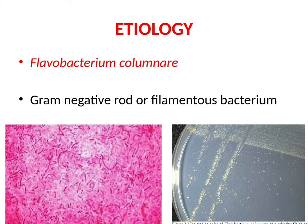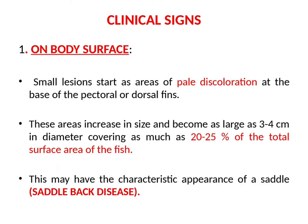You can see the gram-stained image and the image of the bacterial culture of Flavobacterium columnare here. Now let's see the clinical signs. Clinical signs are classified into different categories: on the body surface, on the gills, and other clinical signs. First, let's see the clinical signs on the body surface.